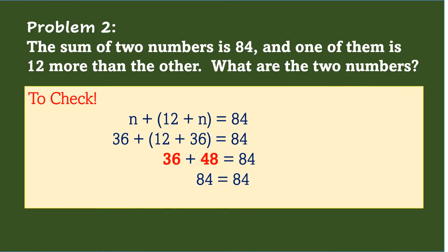To check if the answer is correct, write the original equation while replacing the variable with the answer. So, n plus 12 plus n equals 84. Replacing n is 36 and replacing 12 plus n is 12 plus 36, and this is equal to 48. Thus, 36 plus 48 equals 84, which means the answers 36 and 48 are correct.